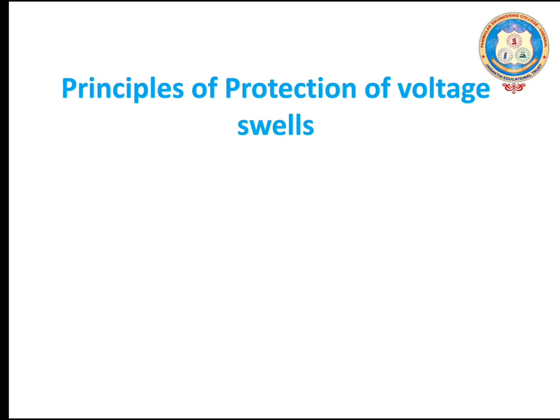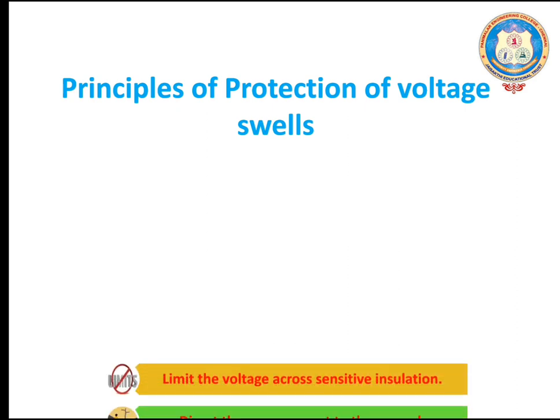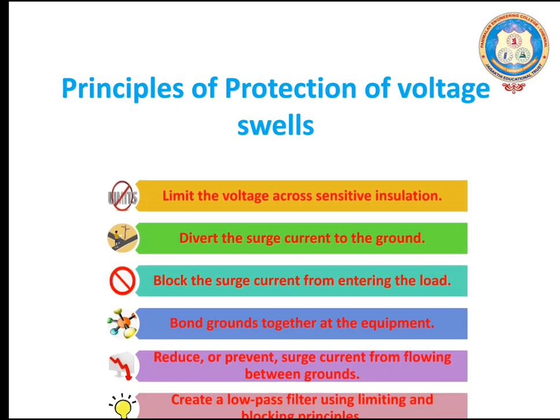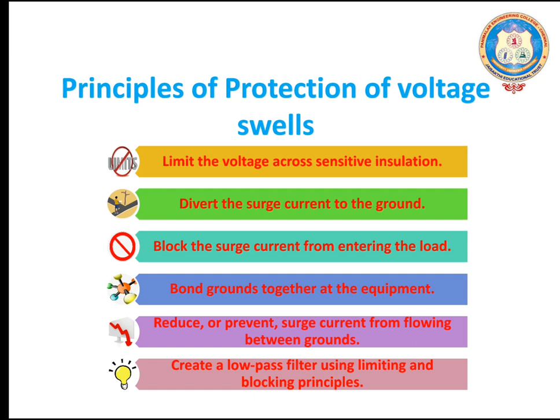What are the principles of protection of voltage swell? Limit the voltage across the sensitive insulation by diverting the surge current to the ground, by blocking the surge current from entering the load, by bonding grounds together at the equipment, by reducing or preventing surge current from flowing between grounds, by creating a low-pass filter, and by using limiting and blocking principles.